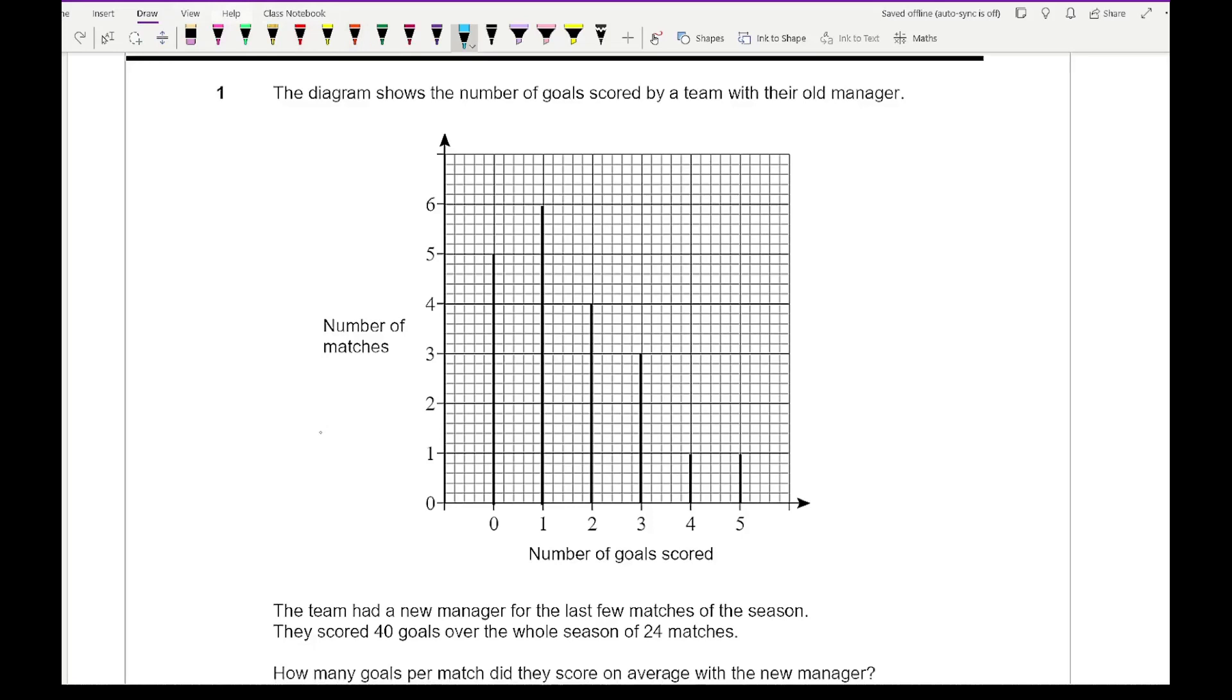We'll start by representing the data in a table. Here we've got the number of goals and the frequency, which is basically what the line graph shows. So here we've got 0, 1, 2, 3, 4, 5. In terms of frequencies, I'll just read off the graph: 0 we've got 5, then 6, then 4, then 3, and we've got 1 and 1.